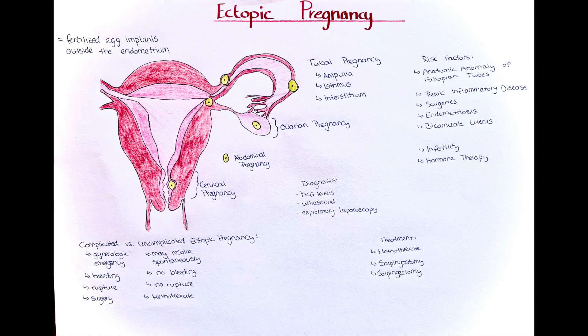We can also differentiate ectopic pregnancies by clinical features and associated risks. A complicated ectopic pregnancy involves severe bleeding — either hemoperitoneum or vaginal bleeding — rupture of the fallopian tube, or hemodynamic compromise, and is a gynecological emergency requiring surgical treatment. An uncomplicated ectopic pregnancy has none of these features and may resolve spontaneously in some cases.